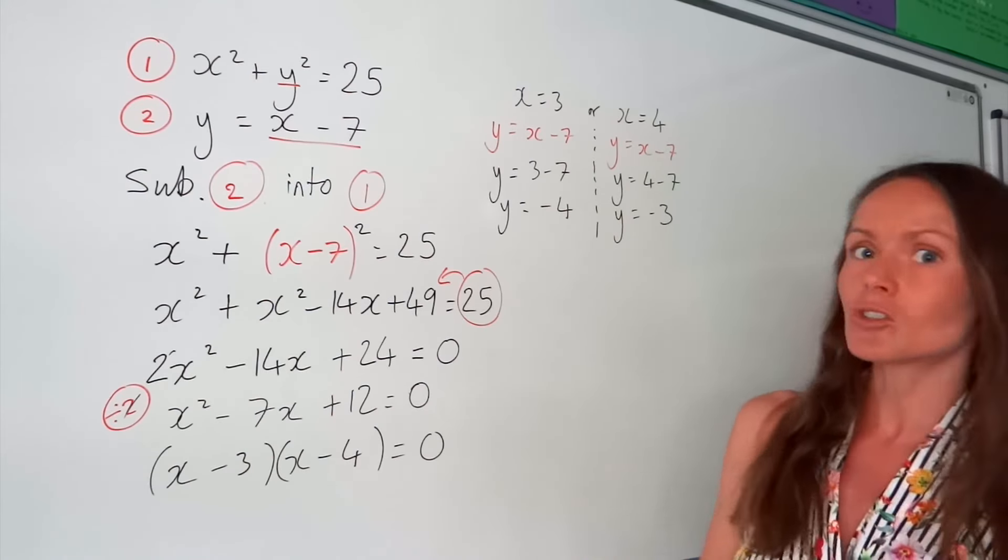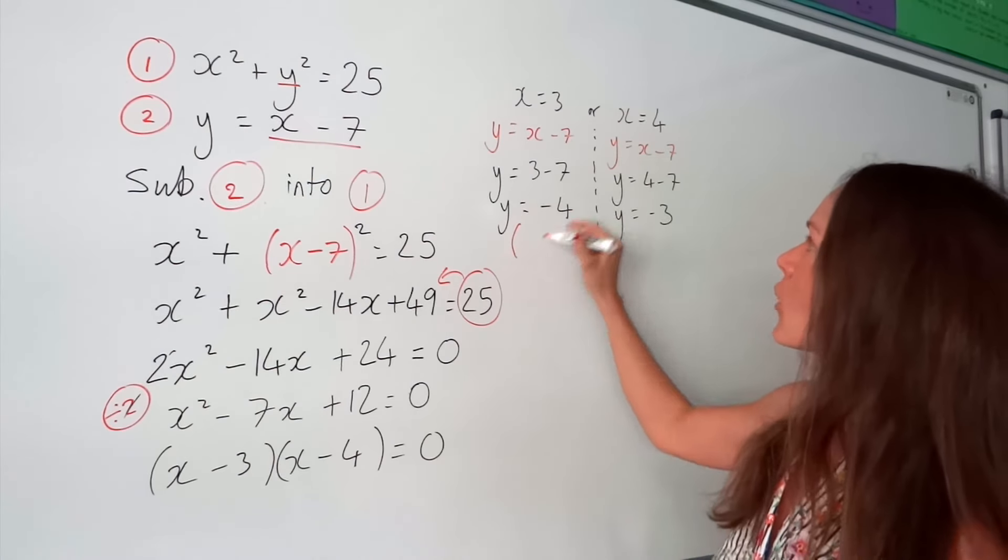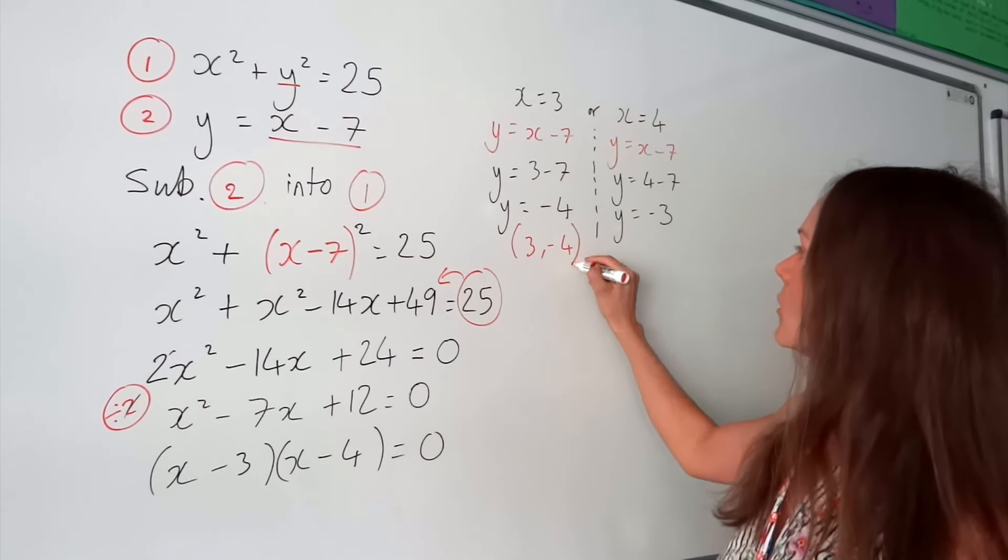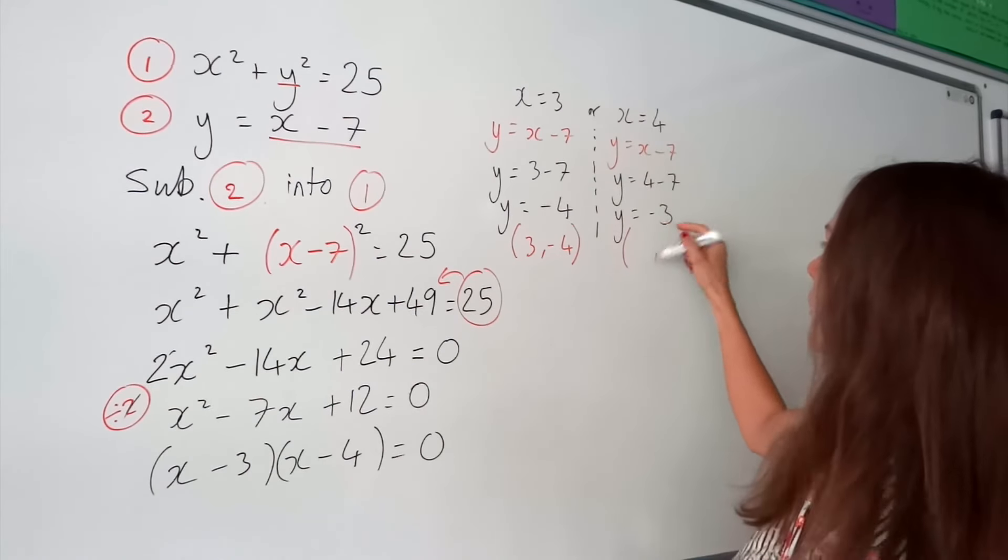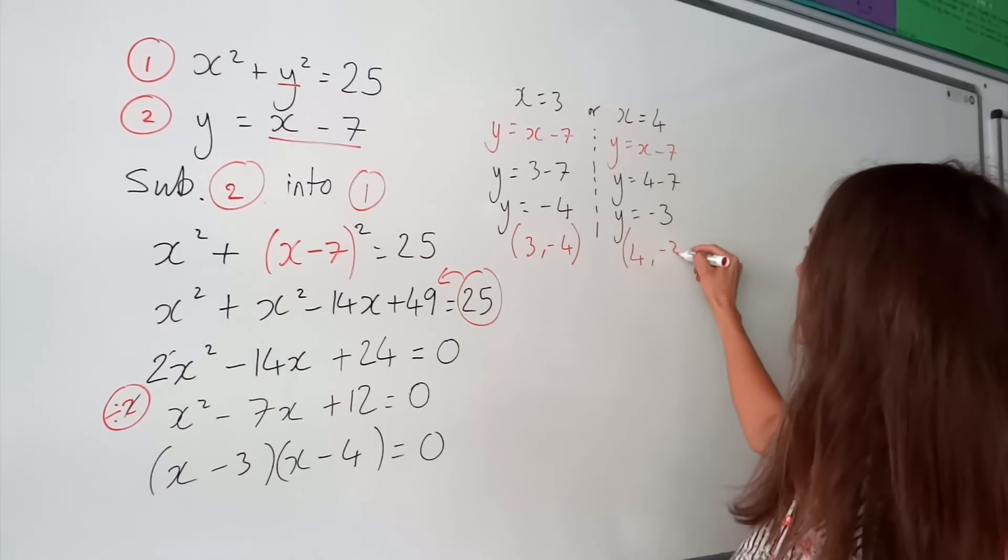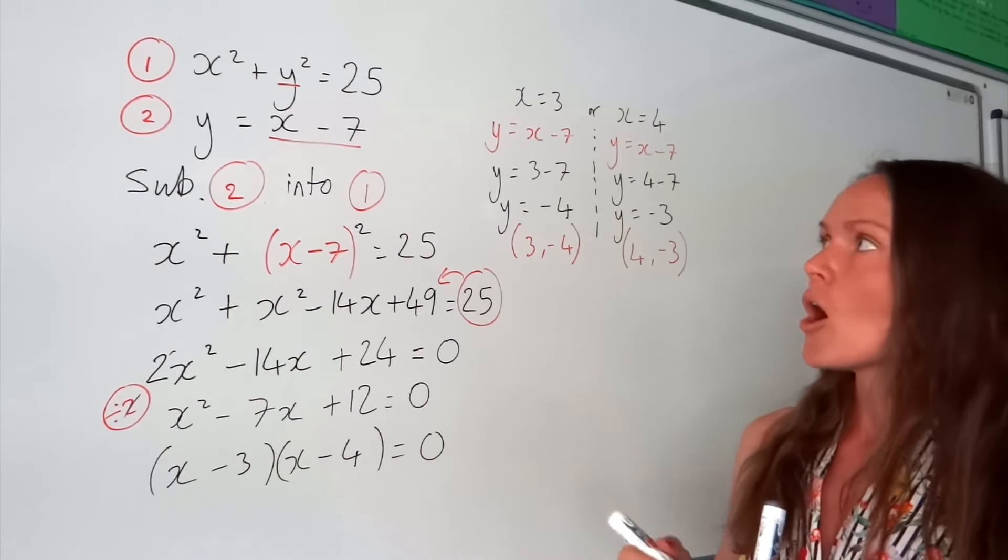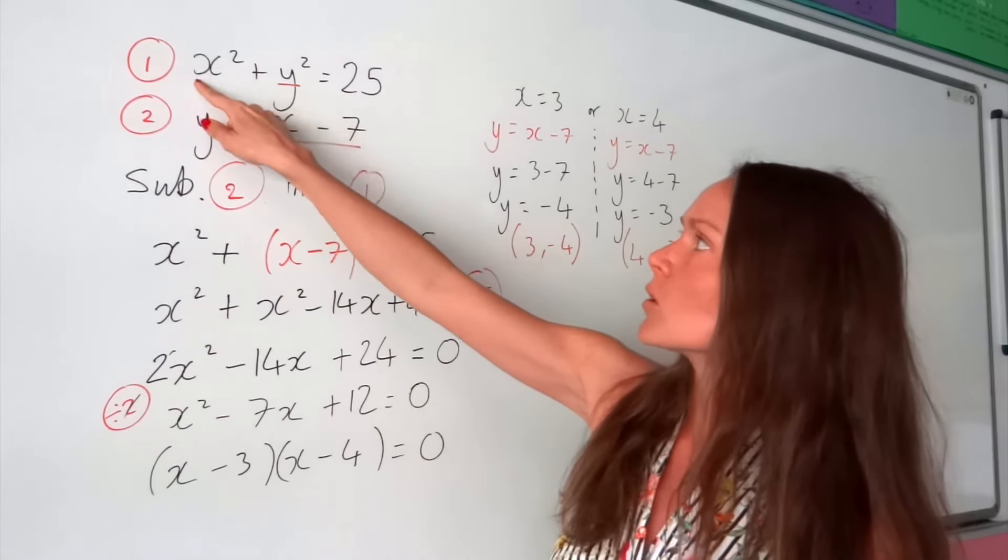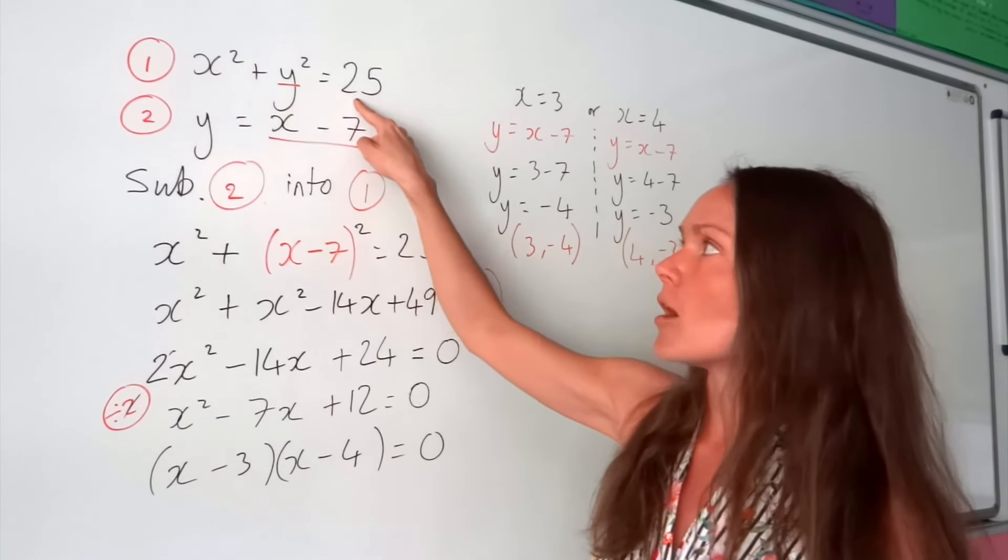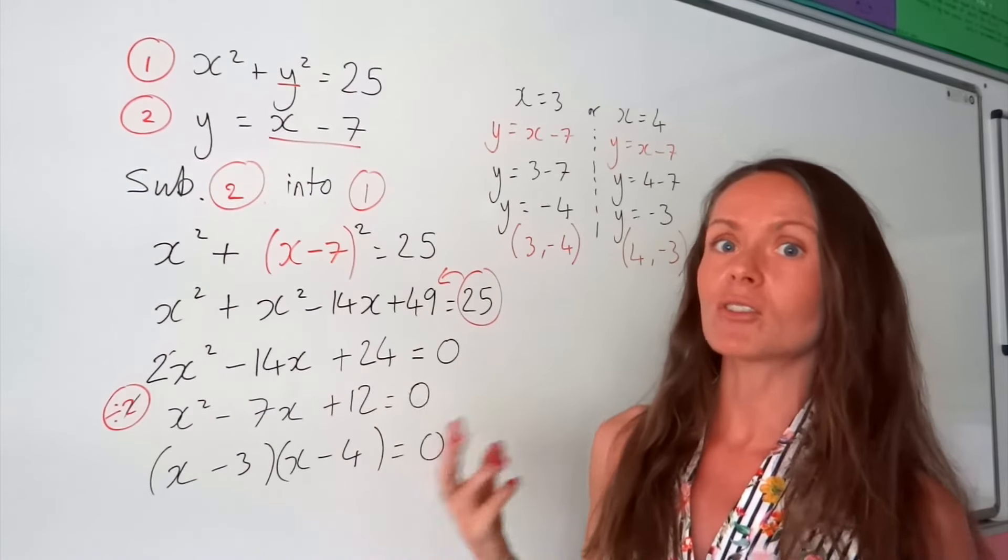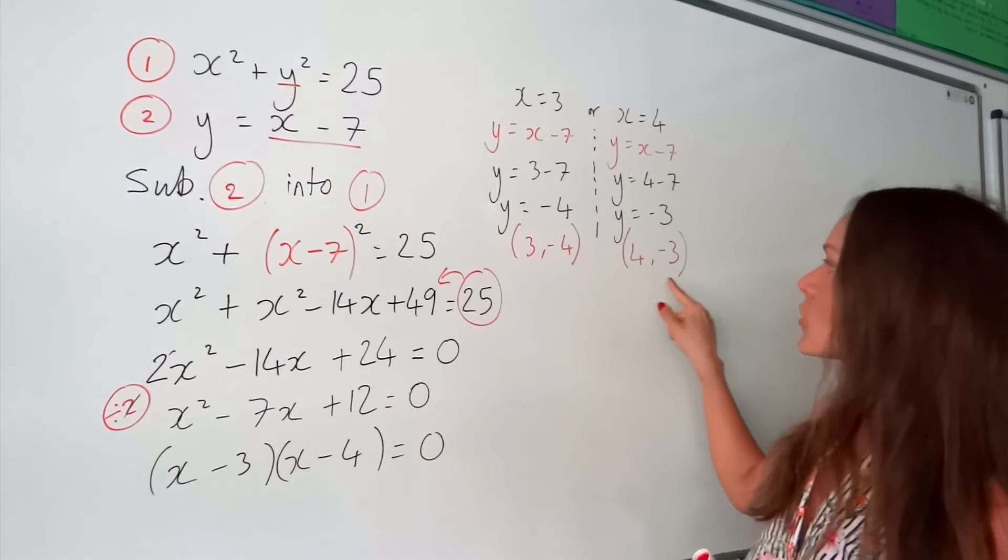So you can see we've got two solutions. We've got this one when x is 3 and y is negative 4, and this one over here when x is 4 and y is negative 3. So remember what these are. These are just coordinates of where this quadratic, so this curved graph, crosses this straight line, this linear. So they cross in two places at those coordinates there.